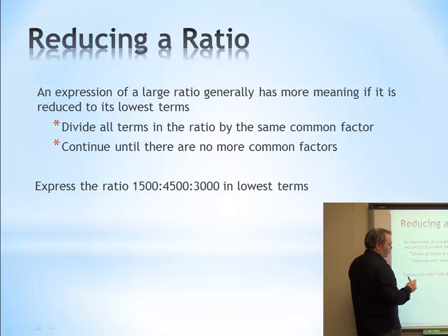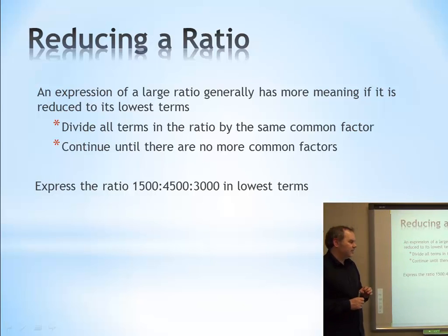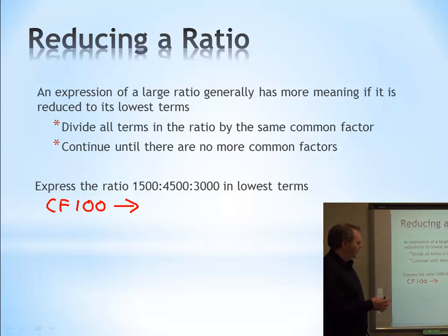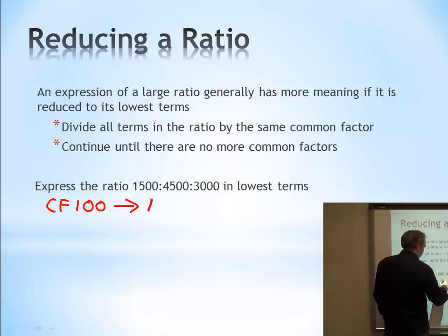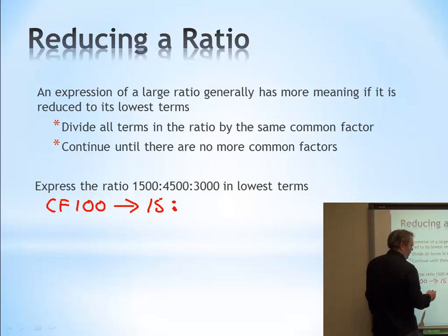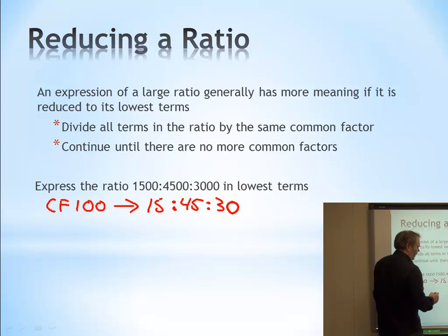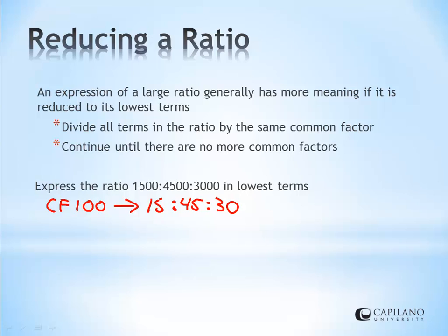So, we're going to take a look at this. Express the ratio of 1500 to 4500 to 3000 in lowest terms. What does that look like? Well, what's something common between these? Well, we could probably take a look at 100. So, if we had a common factor of 100, that would mean divide each one by 100. 1500 divided by 100, this would be 15 to 45 to 30. Divide each term by the same 100. That would be like doing 1500 divided by 100 is 15.